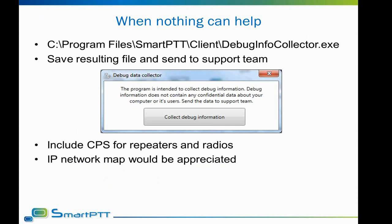When things get tough and you have no idea what to do next, it's time to request help from our technical support team. To make it faster and easier for both sides, first write the description of the issue as fully as possible — what you are trying to do, what is happening in the system, what the symptoms are, and what you expect from the system. Second, send us your configuration files. To do that quickly, go to C:/Program Files/SmartPTT/Client or SmartPTT/Server and find the application called DebugInfoCollector.exe. Run it, save the resulting file, and send it with your request to share all your settings.